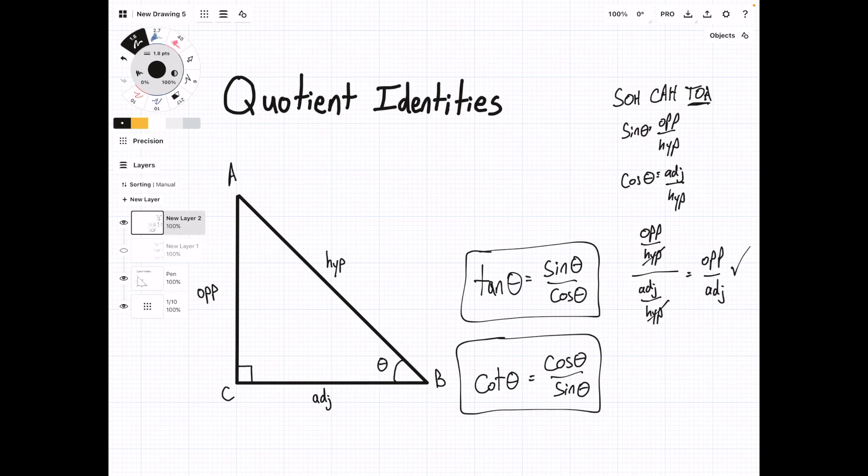Now for cotangent, we can do the same thing. Adjacent over hypotenuse over sine, which is opposite over hypotenuse. The hypotenuses cancel, and we have adjacent over opposite. Cotangent is the reciprocal of tangent, so we just flip tangent, and again, adjacent over opposite checks out.